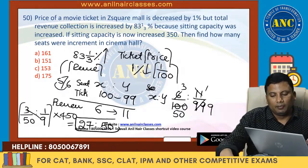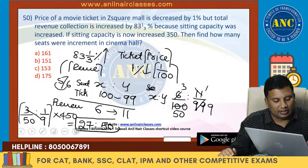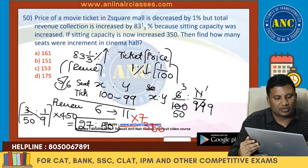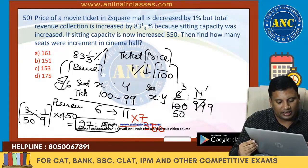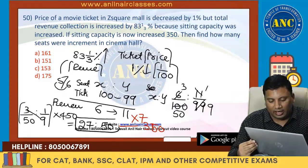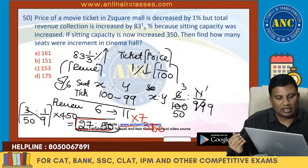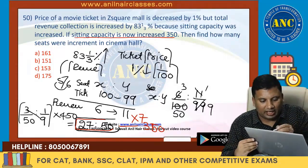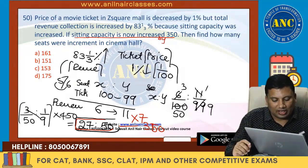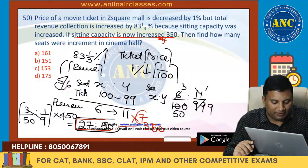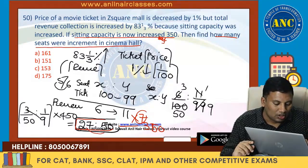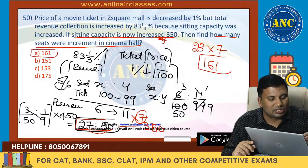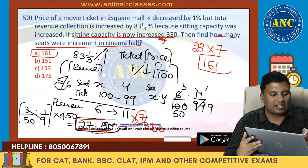Now, seating capacity is increased to 350. So 50 is becoming 350, which means multiply by 7. The question asks: how many seats were incremented in the cinema hall? From 27 to 50, the increase is 23. Multiply by 7: 23×7 = 161. So the answer is 161. Just read the question properly — don't hurry. Answer is 161.